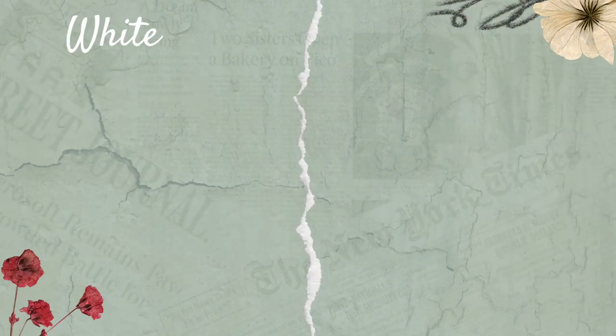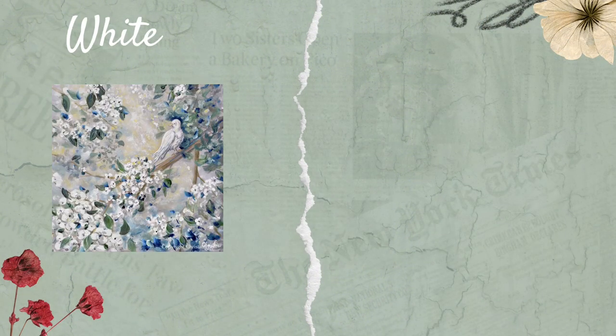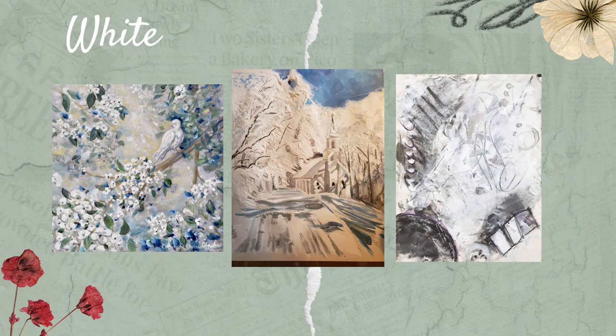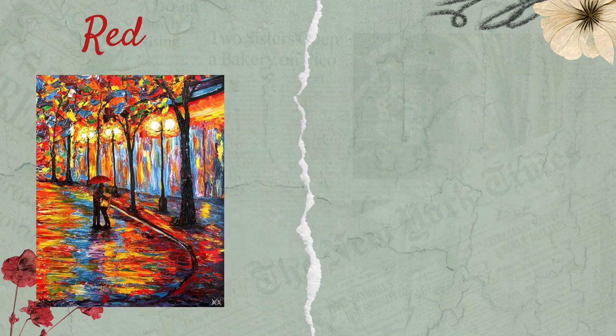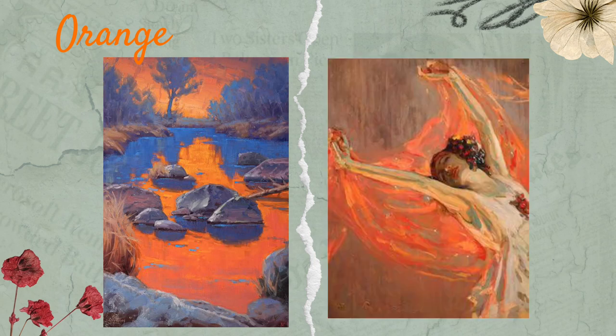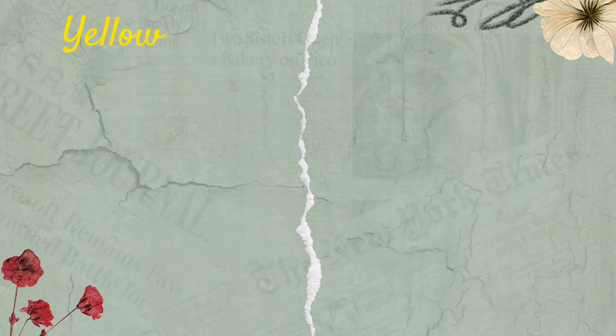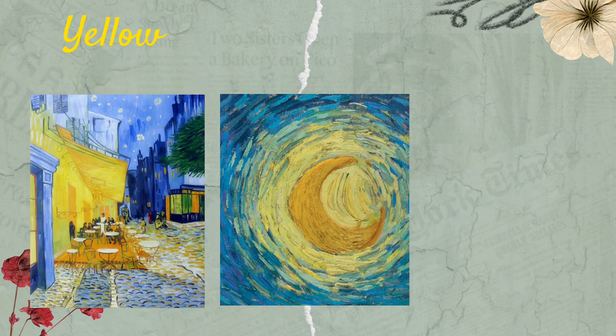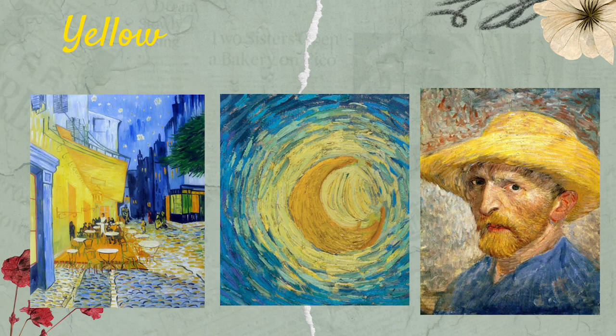The color connotation for white is purity, innocence, and emptiness. While red is for love, anger, and excitement. Orange is associated with warmth and energy. Yellow symbolizes happiness, brightness, and cowardliness.